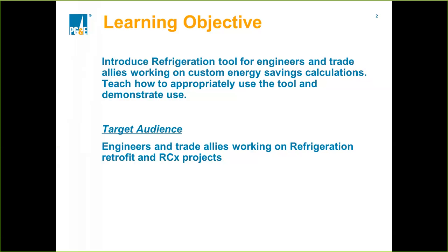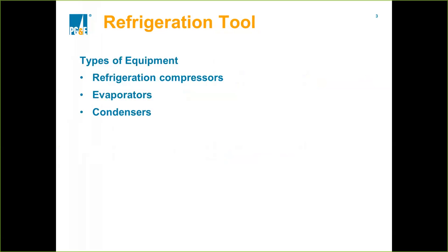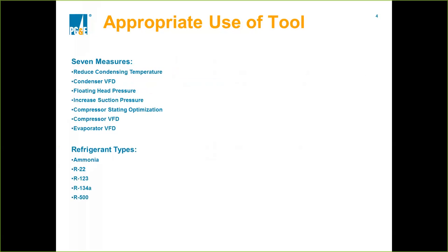With that said, I'm going to switch it over to Molina, who's going to give you a bit more direction on how to use the tool. Thank you, Brian. In the refrigeration tool we have three types of equipment: the refrigeration compressor, the evaporators, and the condensers. If you have attended or watched the HVAC tool, you will see that for each type of equipment we had a different tab — in this case they are all in one calculation tab, which I will show you later. Those are the three types of equipment for which we have developed energy efficiency measures, and there are seven measures included in the calculator.